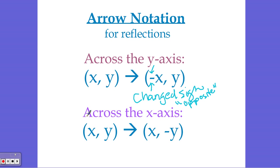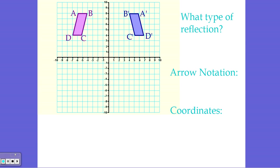The same logic applies for the X axis reflection. For every point, the first value (X) stayed the same, and the second value (Y) changed sign. So the arrow notation shows X stays the same and negative Y, meaning all Y coordinates changed sign.